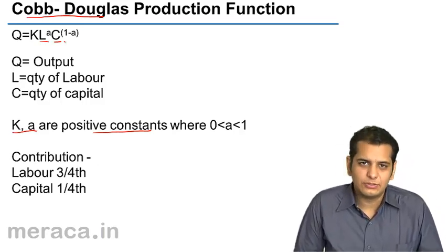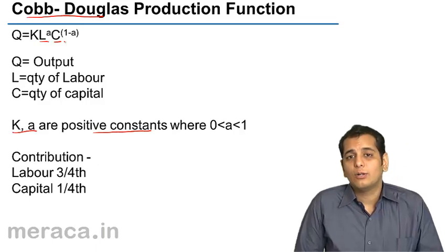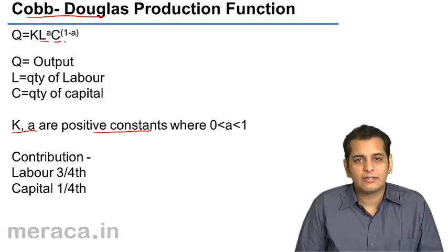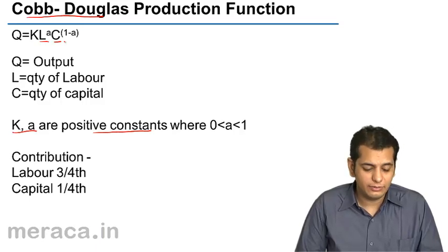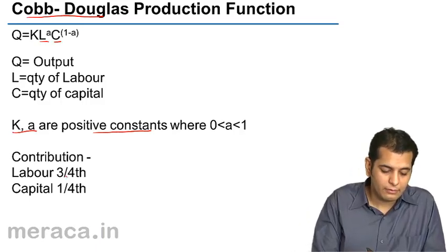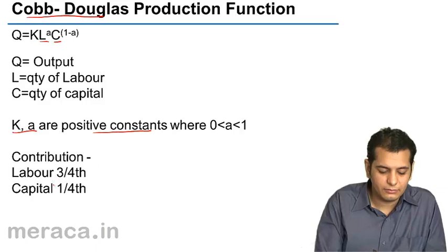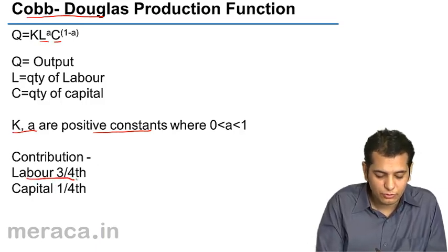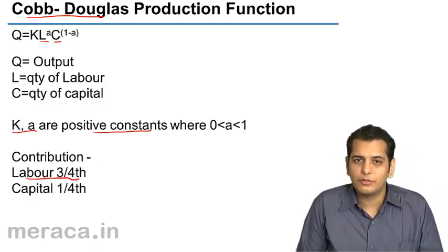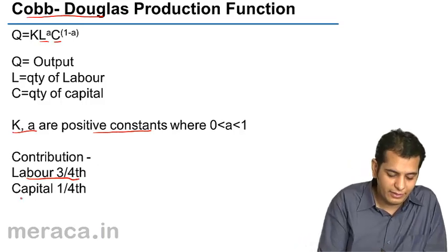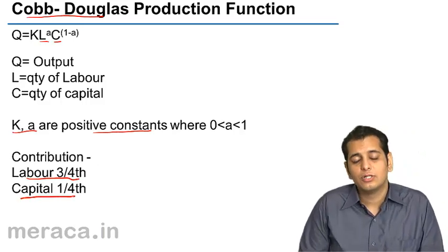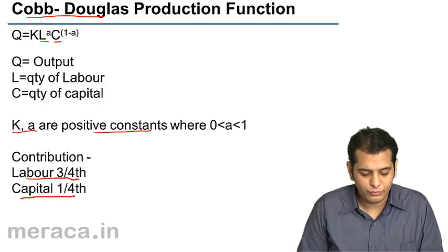When these two mathematicians went around surveying in the factories and industries, they found out that in the short run the labour contributes to around three-fourths of the total production, whereas capital contributes to around one-fourth of the total production.